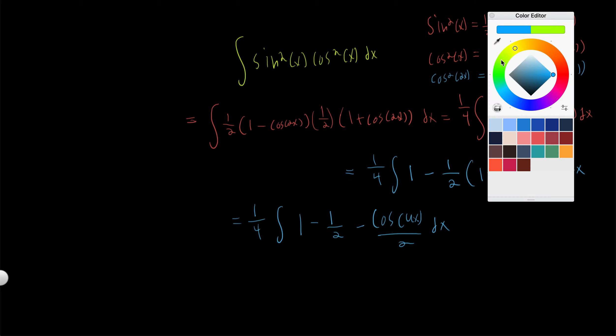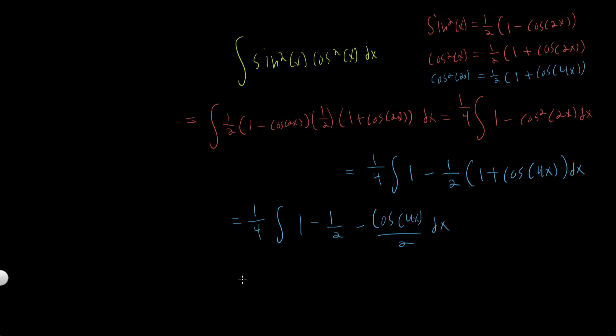Let's take that integral. The integral of one is just x, so this is all one-fourth times x minus one-half x minus, let's think about what the integral of cosine of 4x over two is. That would be sine of 4x over eight.